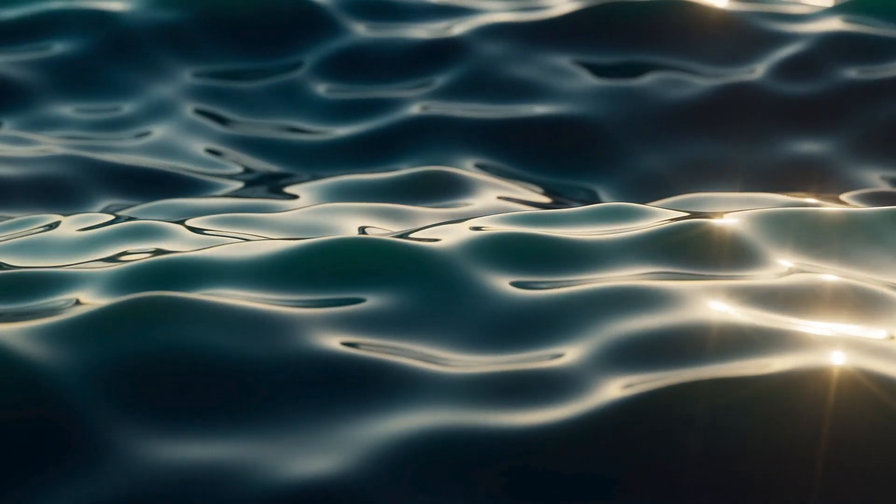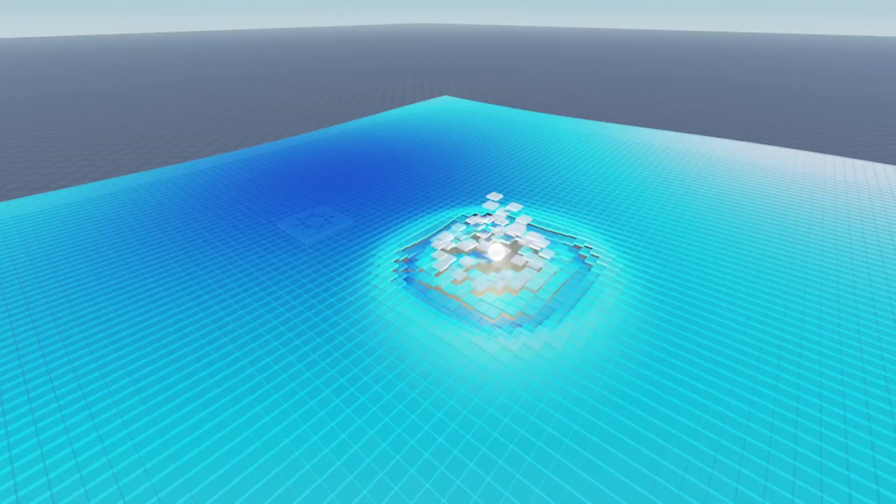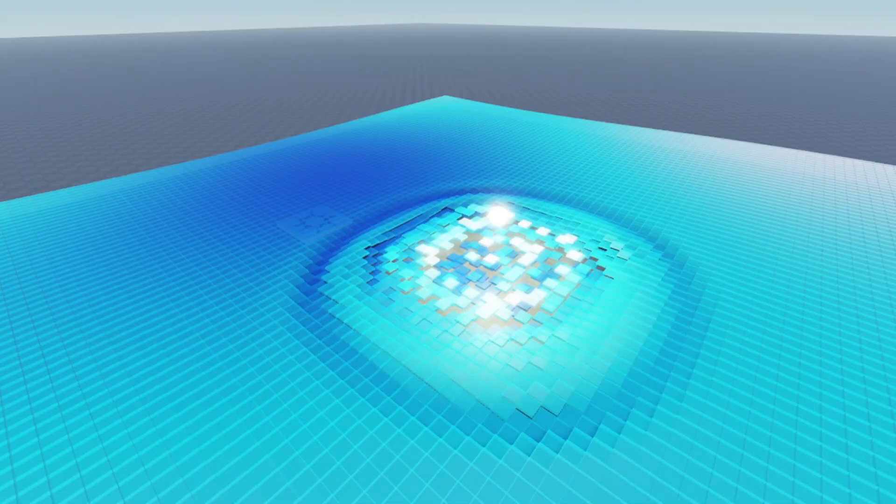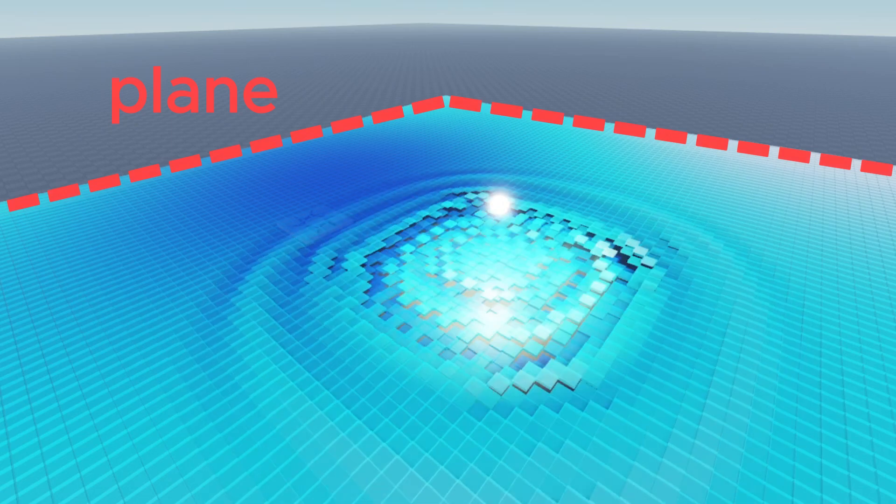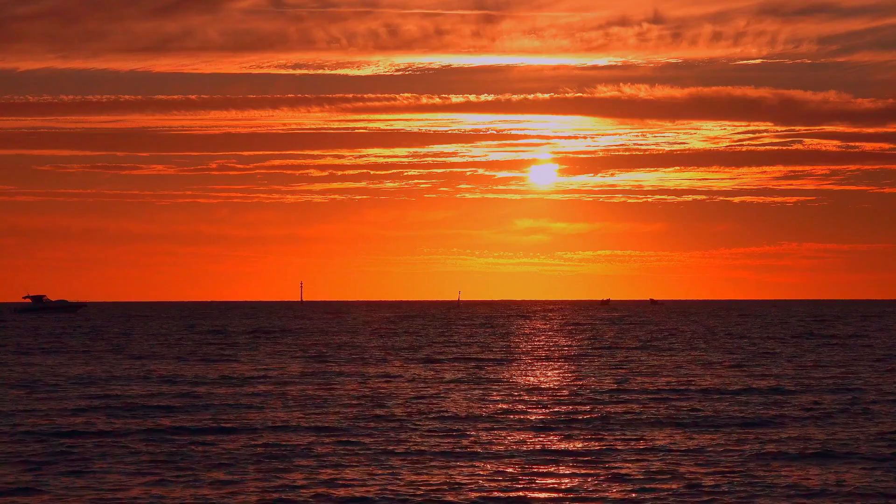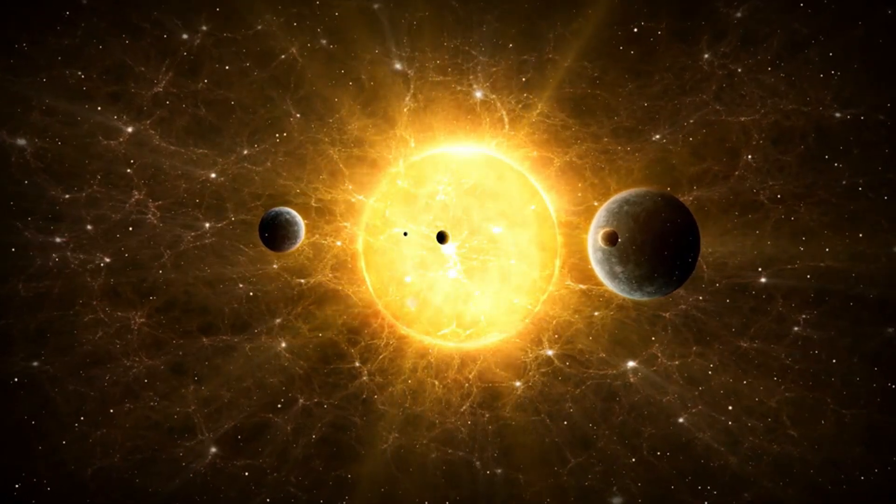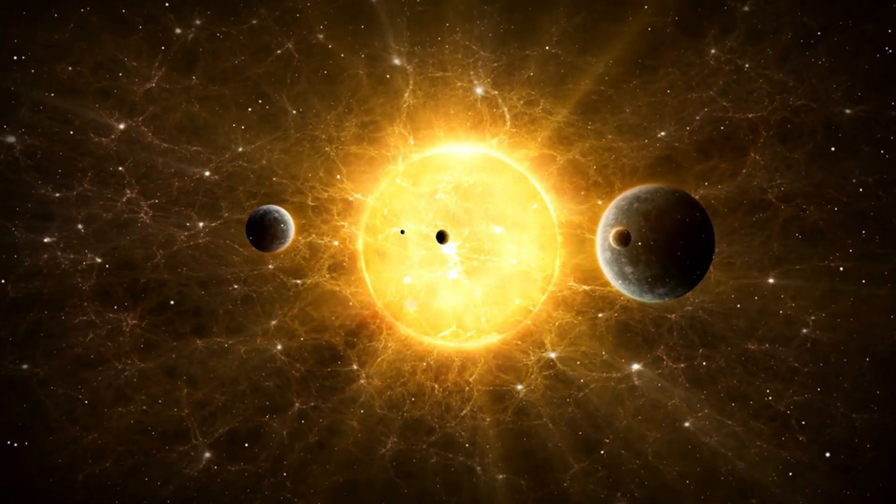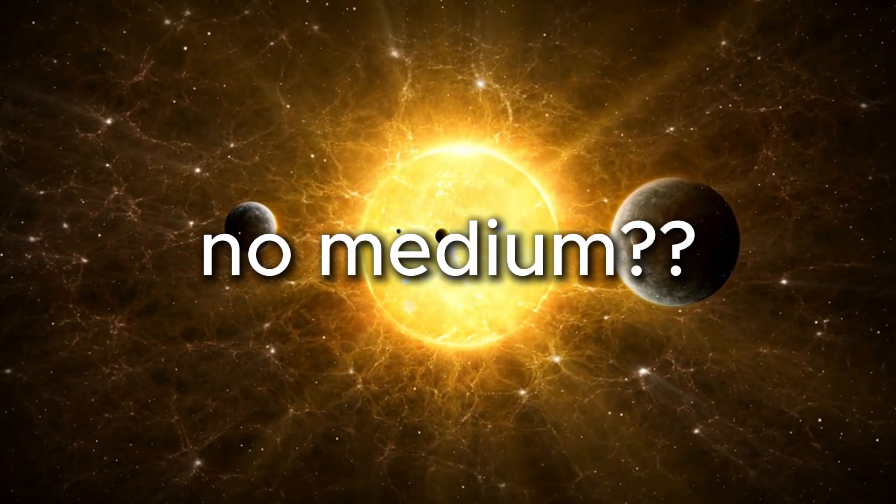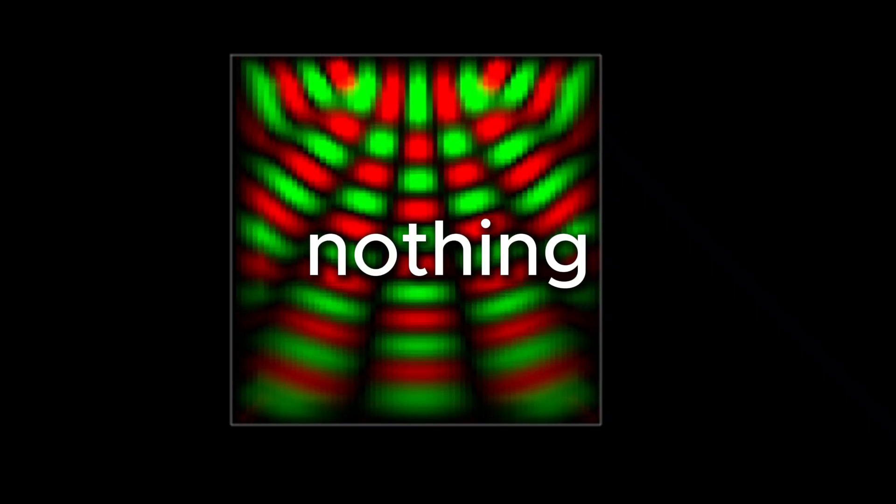However, waves required a medium, a disturbance to travel through. In this Roblox simulation, for instance, this plane serves as the medium for the waves. But when you look into the sky, you can see light coming from the Sun traveling through the vacuum of space. No air, no water, no medium. So how can a wave travel through nothing?